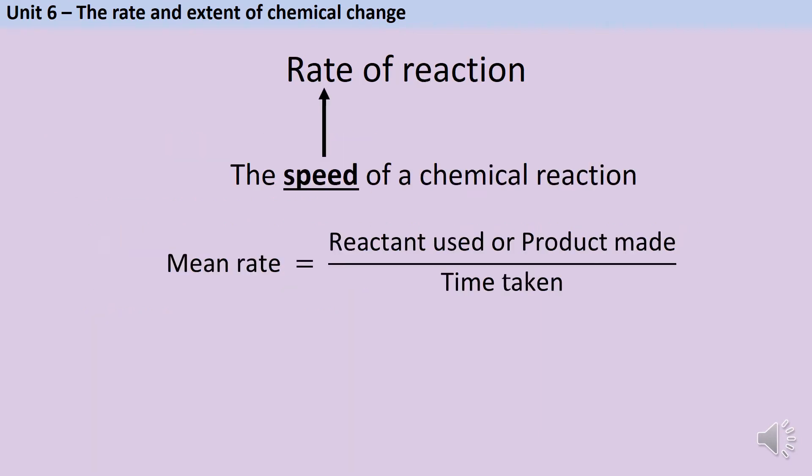In case you weren't sure, the rate of a reaction is its speed and we can calculate it numerically by looking at the mass or volume of a reactant being used up or the mass or volume of a product being made and divide either of those numbers by the time taken for that reaction.